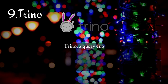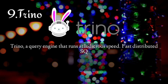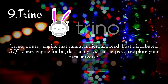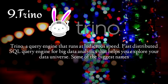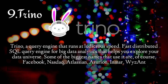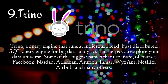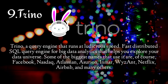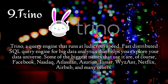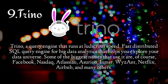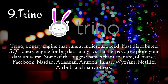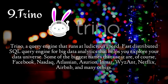Trino is a query engine that runs at ludicrous speed — a fast distributed SQL query engine for big data analytics that helps you explore your data universe. Some of the biggest names that use it are Facebook, Nasdaq, Atlassian, Asurian, Inma, Weisant, Netflix, Airbnb, and many others.